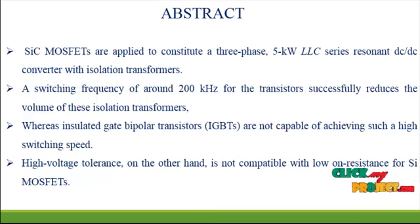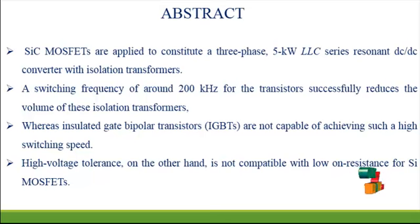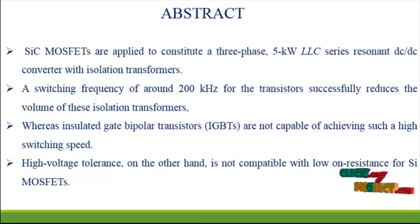Current balancing transformers among the three phases effectively suppress maximum pulse peak current from arising in the circuit. This is a technique that minimizes the input and output capacitance. The conversion efficiency of the converter reaches 97.6% at 5 kW operation.